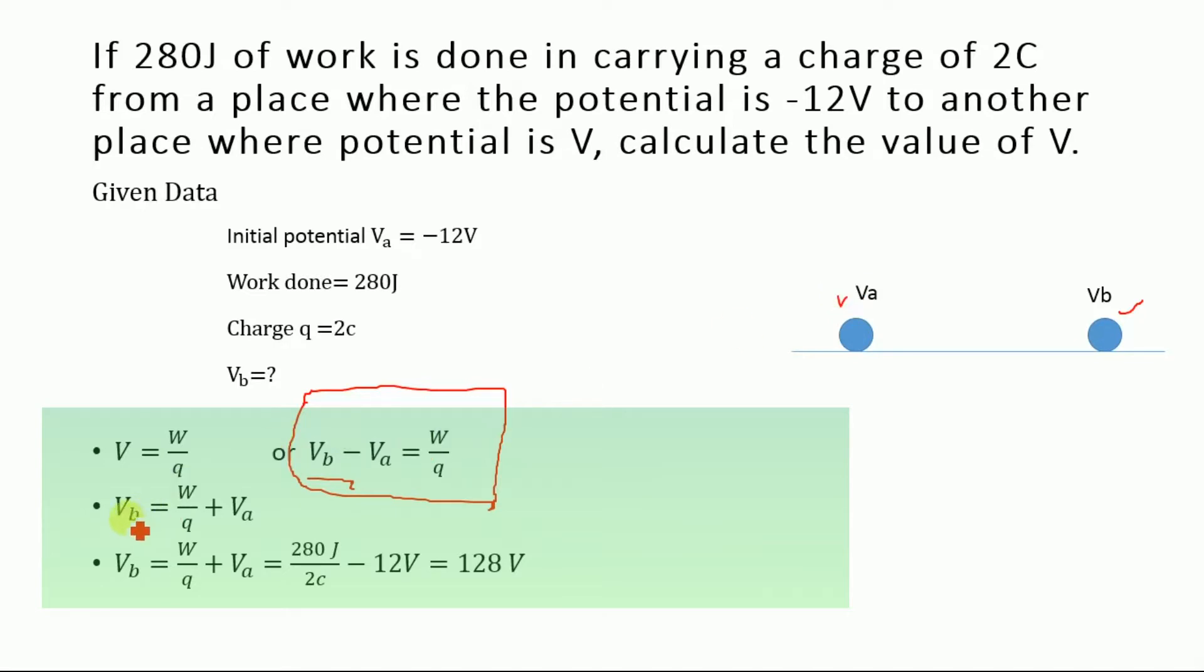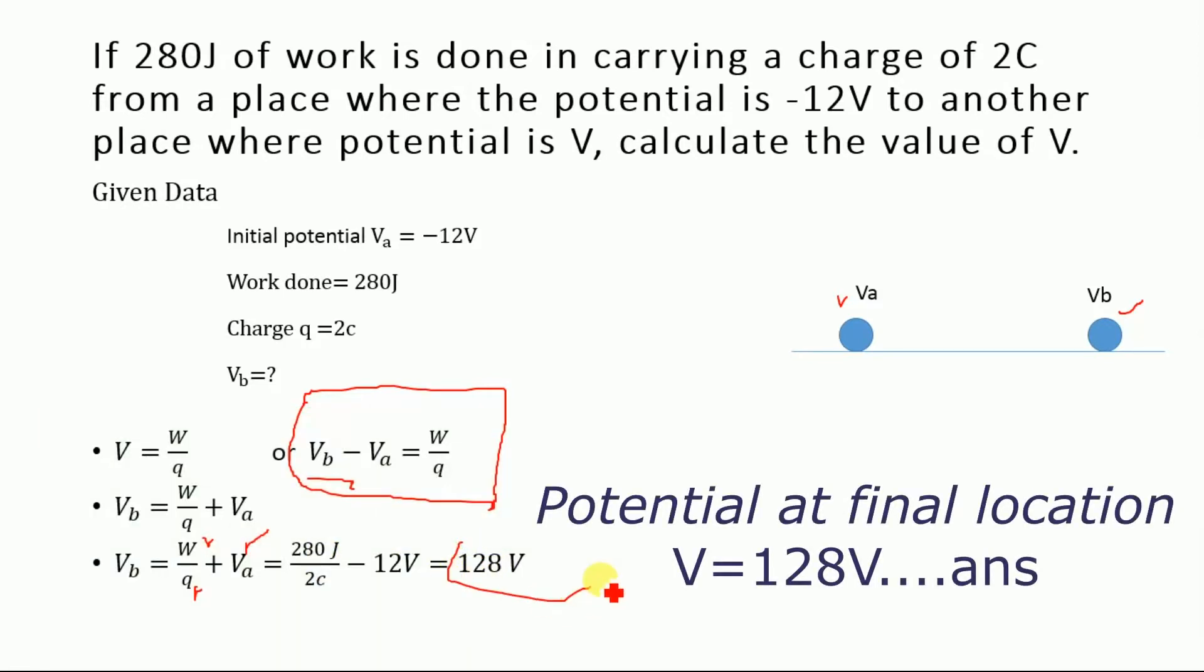So we have VB is equal to W by q plus VA. Now substitute the values: work done is 280 Joules, charge is 2 coulombs, and the initial position potential VA is minus 12 volts. So we have the final potential VB is equal to 280 Joules divided by 2 coulombs minus 12 volts, which is equal to 128 volts.